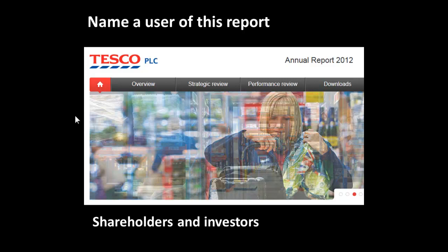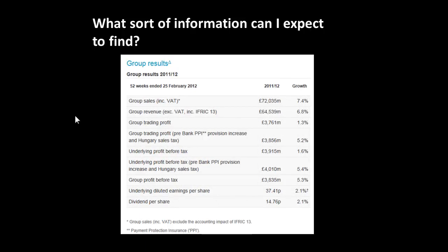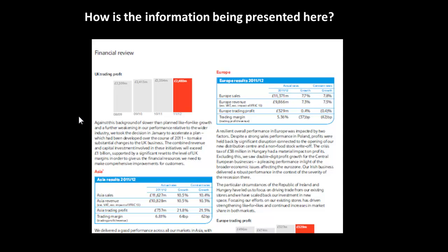I'm just going to mention two: shareholders and investors are interested in that type of report. And what can you expect to find in an annual report? Well, remember a lot of it is basically just advertising the company to shareholders and potential investors. We have sales figures and overall profit ones. Information is presented in different ways — we can see figures, charts, and of course writing.